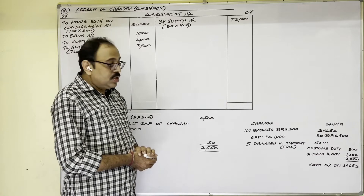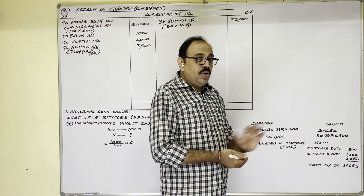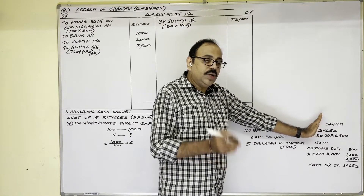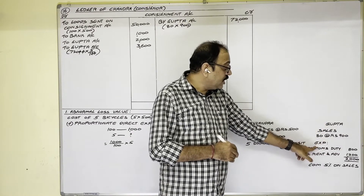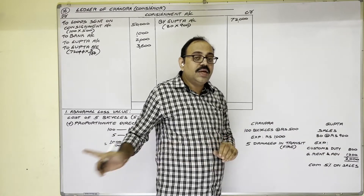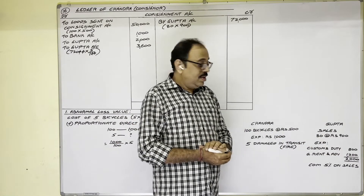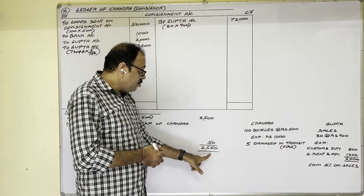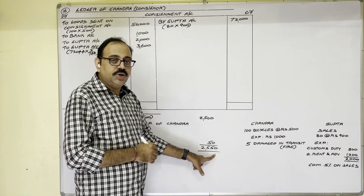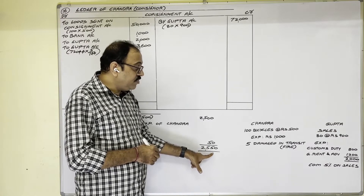Suppose the goods were lost in the consignee's godown after he received 100 bicycles and incurred customs duty — in that case, consignee's direct expenditure should also be added. So the abnormal loss value is 2550 rupees. There is no insurance here, so this 2550 rupees is the loss to be borne by Chandra.